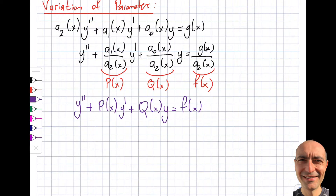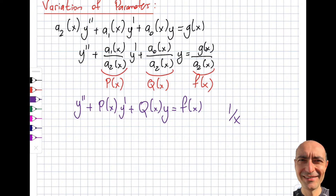In the previous segment we looked at cases where P and Q were constant values, and F(x) had a specific form. For example, F(x) could be an exponential like e^(2x) or e^(3x), sine, cosine, or a polynomial. But if F(x) was something like 1/x, I was not able to apply that approach — those cases were limited.